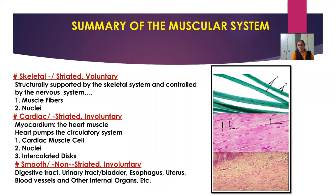These intercalated discs in cardiac muscles help in contraction and relaxation. The third diagram is of smooth muscles, which are non-striated — no bands or striations are seen — and are also involuntary in function. Smooth muscles are generally present in the digestive tract, urinary tract, esophagus, uterus, blood vessels, and other internal organs.